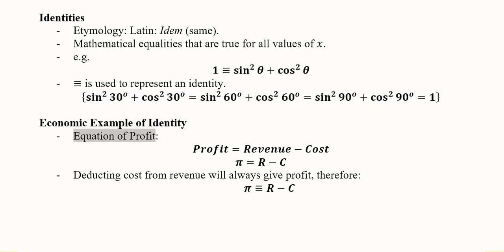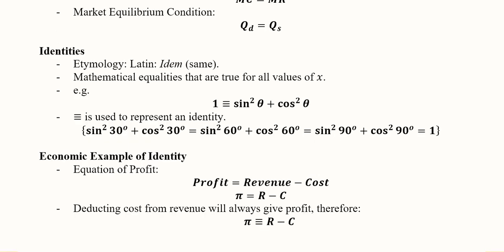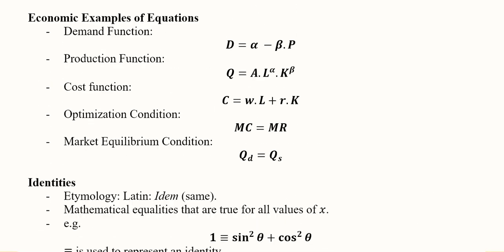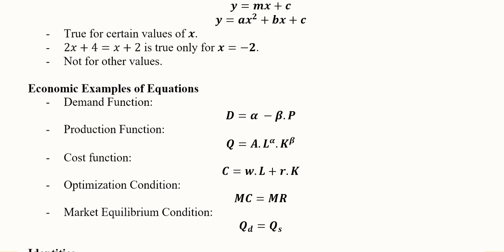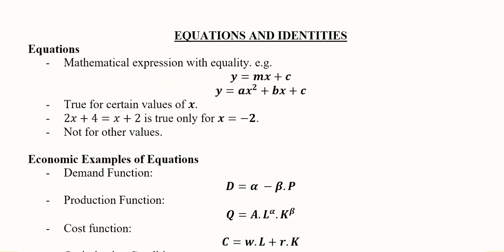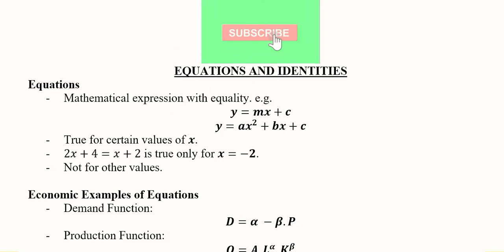Economic example of identity is the equation of profit because whenever we take the difference of revenue and the cost, the answer will always be equal to profit. And that is represented with π = R - C. Deducting cost from revenue will always give profit. Therefore, π is identically equal to R minus C. So this was about the identity and the economic examples. And this is how we can differentiate between the equations and identities.